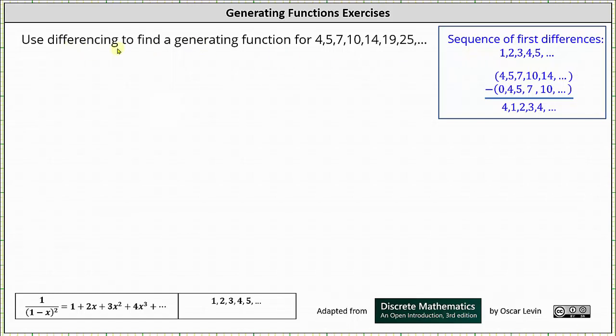Welcome to an example on how to use differencing to find a generating function for a sequence. Here we're asked to find the generating function for the sequence 4, 5, 7, 10, 14, 19, 25, and so on.